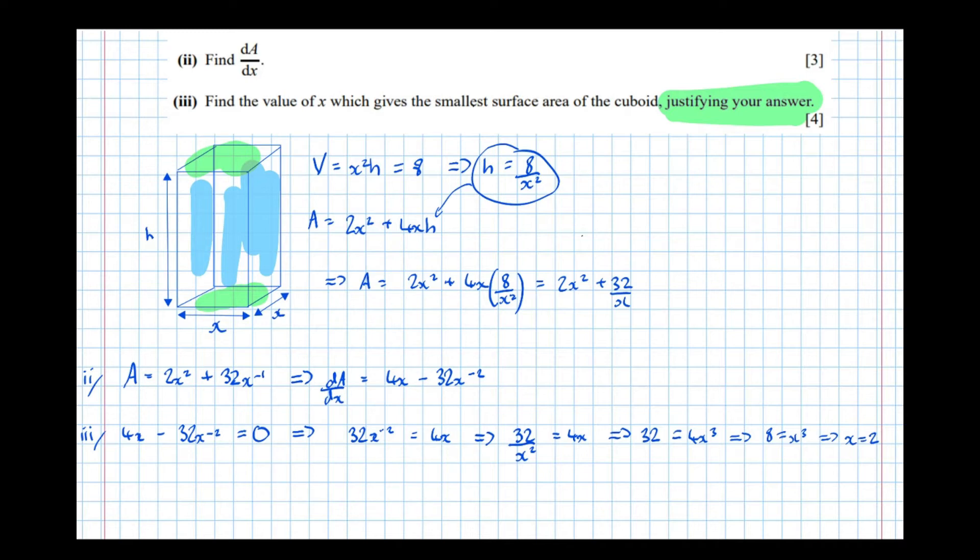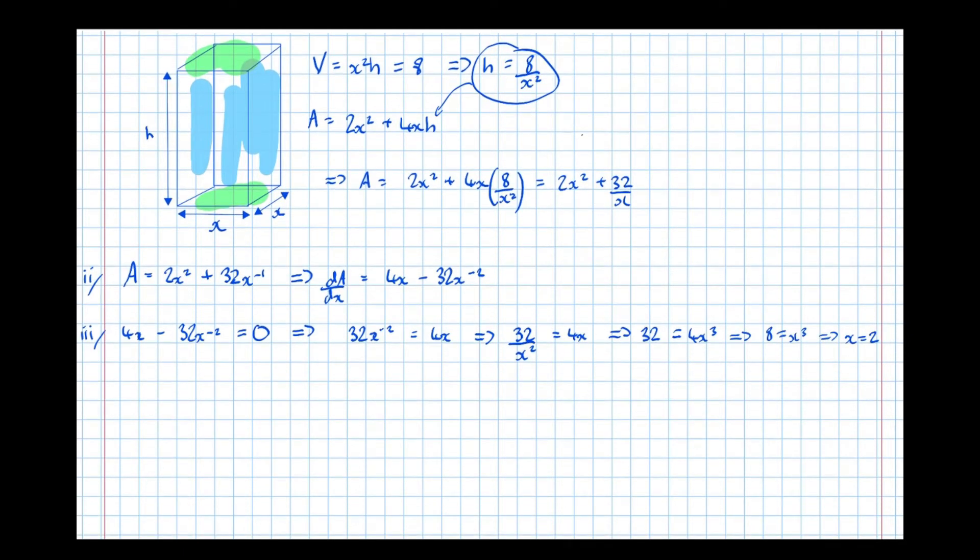So now if x equals 2, we're almost done. It didn't ask us to actually find the smallest surface area. If it did, we would have had to sub that back in the formula A. But it just said find the value of x which gives the smallest surface area, so we're almost done. But it also asks us to justify our answer. That means use the second differential to actually justify that it really is a minimum surface area. So finding the second differential, d2A by dx squared.